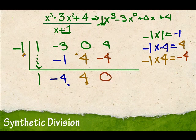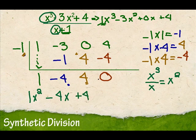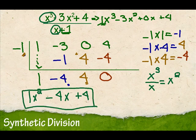Remember when we were doing long division, we take x to the third divided by x. x to the third divided by x is x squared. So that's going to be what we have here. Remember, this isn't my power — this is my coefficient. So this will be 1x squared minus 4x — remember, I have to go in descending order — plus 4. Now my remainder is 0, so this actually turns out to be my answer. We don't need that 1 there, so my answer is going to be x squared minus 4x plus 4.